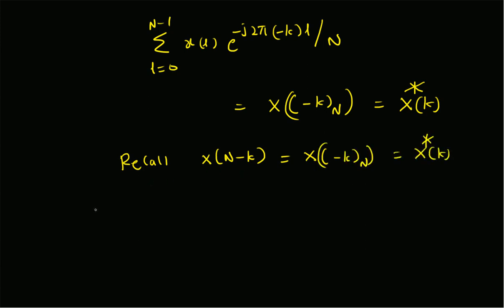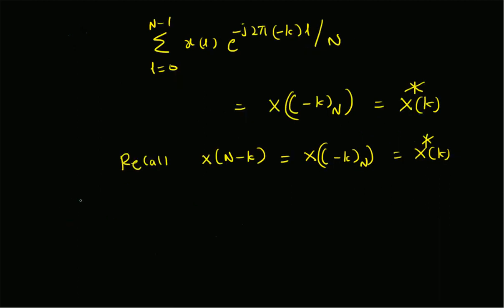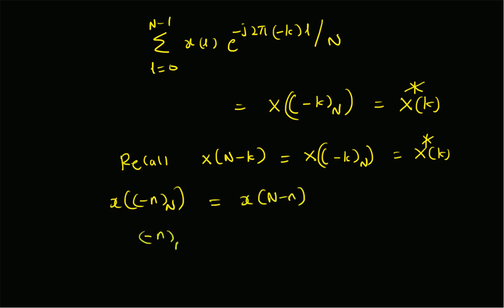Recall that from the properties of the DFT, X[N-k] is indeed equal to X[-k mod N], and it is also in turn equal to X[k] conjugate. This proves the theorem: when x[n] has DFT X[k], the DFT of x[-n mod N] — or equivalently x[N-n] — is X[-k mod N] and X[N-k]. Note that x[-n mod N] equals x[N-n] because -n mod N equals N-n.